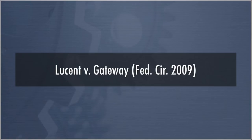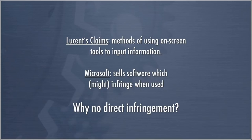One of the issues in Lucent v. Gateway is that the basic claim was methods of using on-screen tools to input information, and Microsoft sells software which might infringe when used. Microsoft is accused of indirect infringement because there's no evidence that Microsoft itself used the date picker. What Lucent does have evidence of is that some of the users of Microsoft's software have used the date picker. Because Microsoft is selling the software together with some instructions on how to use it, indirect infringement is the claim against Microsoft.